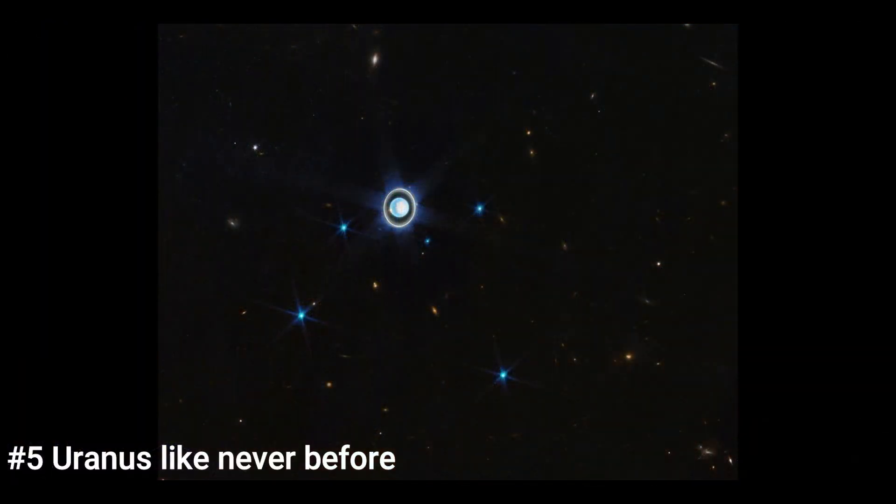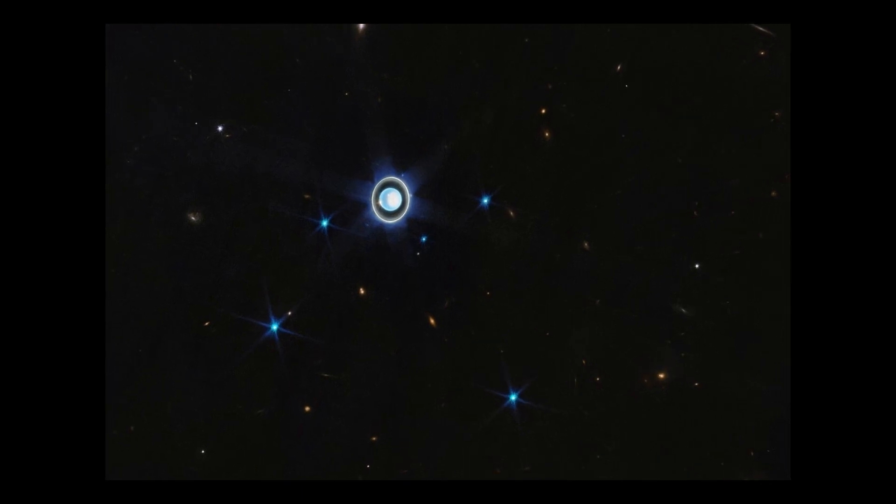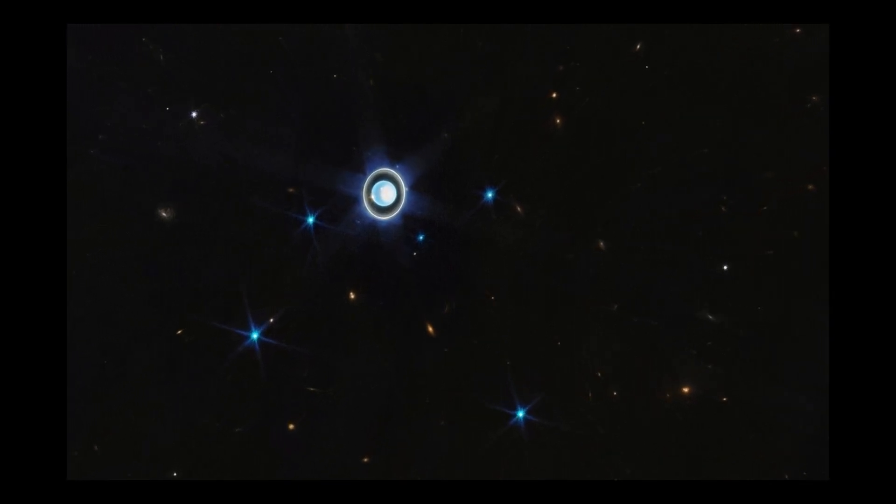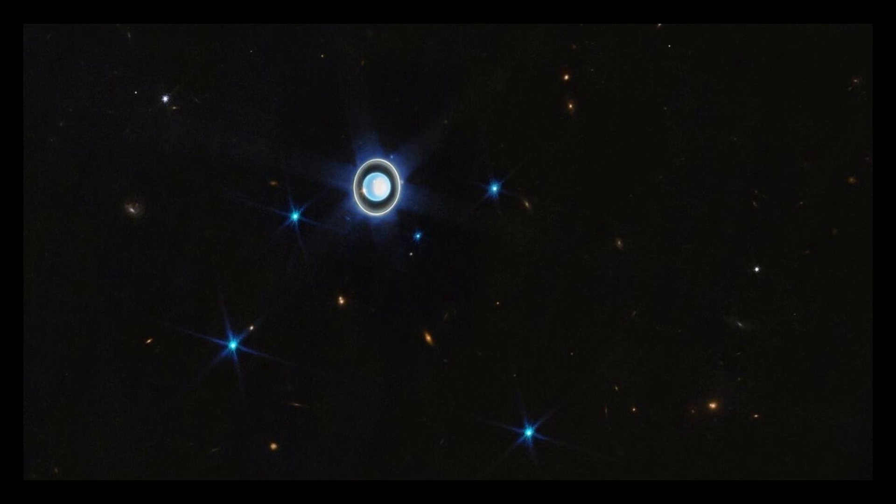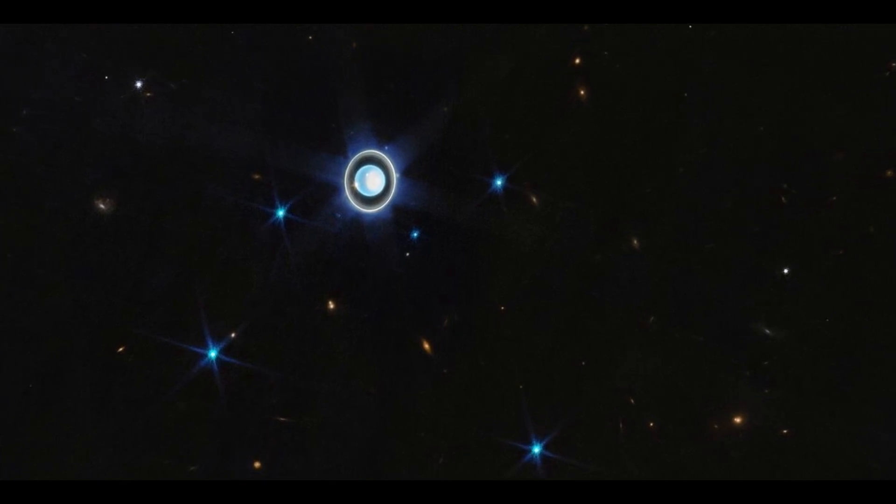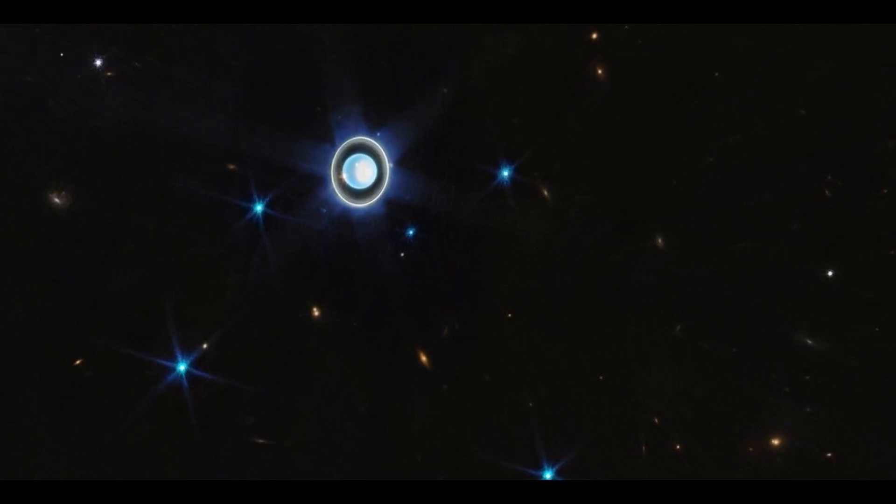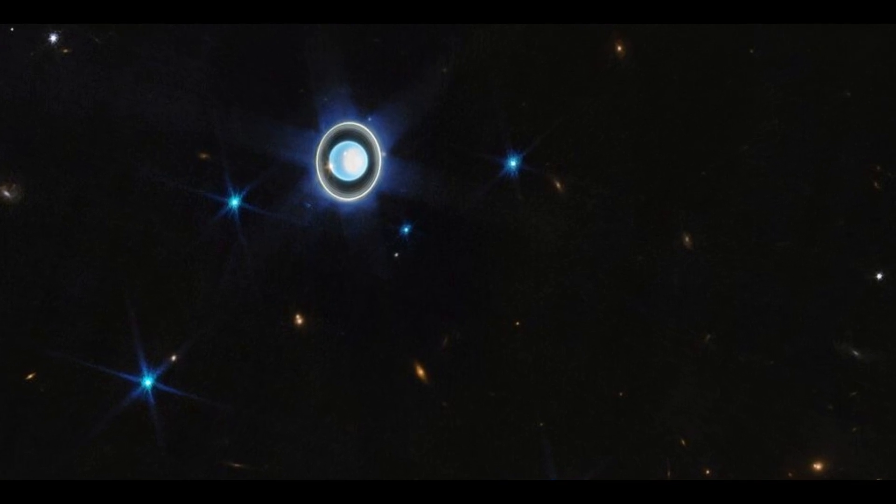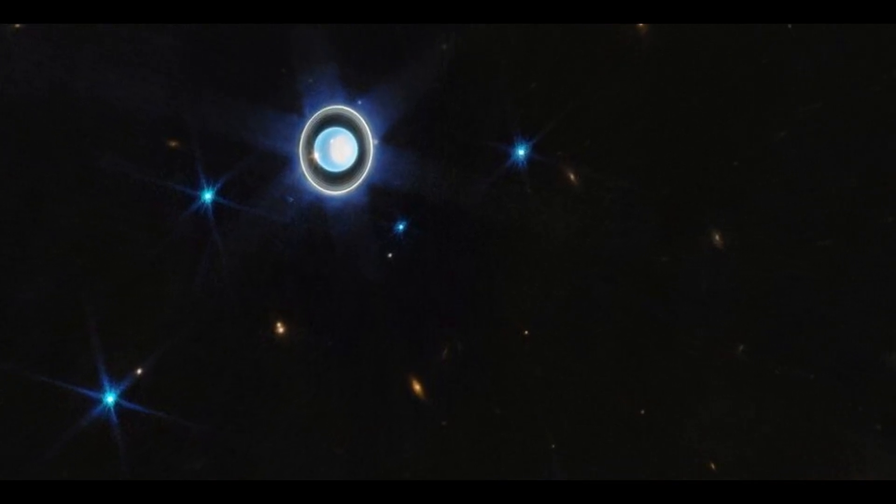Number 5. Uranus Like Never Before. There is not enough affection for Uranus, the coolest in all seriousness. The asymmetrical ice giant has the most irregular orbit of any planet in the solar system, and if it were closer for clearer views, its ring system might even be comparable to Saturn's.